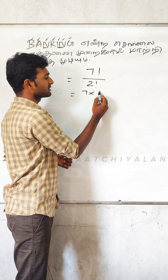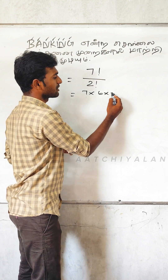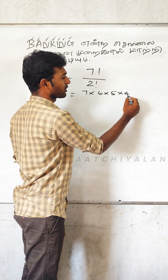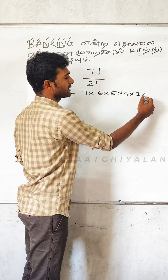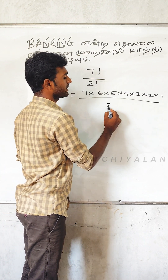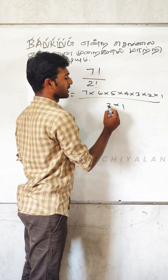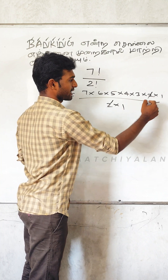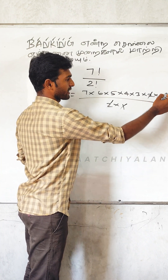7, 6, 5, 4, 3, 2, 1 by 2 into 1. The 2 and the 2 cancels. The 1 and the 1 cancels.